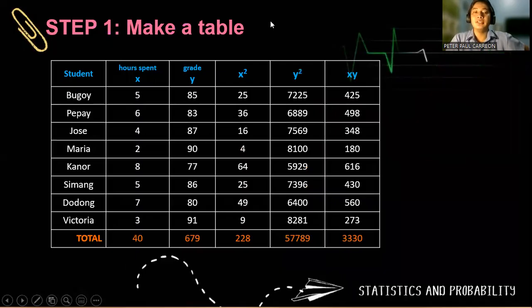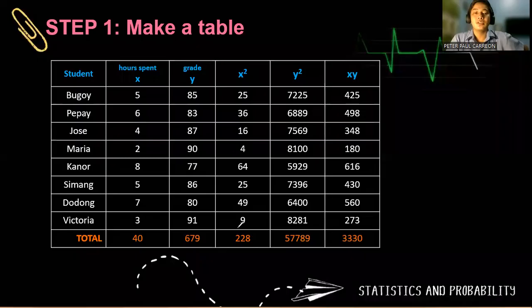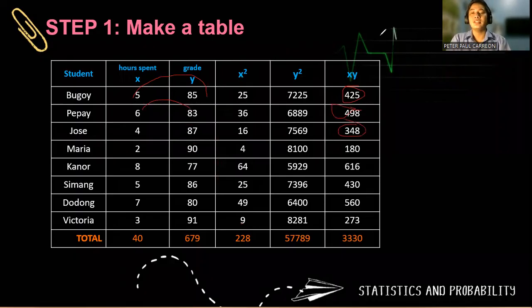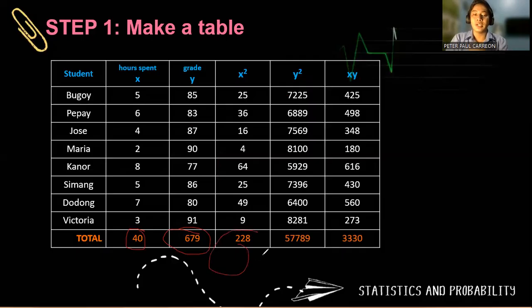Following step number one, we have x squared. So you square everything in this one: six times six, four times four, two times two, and so on. To get y squared, you have to square 85, 83, and so on. And to get the fifth column, you have to multiply five times 85, six times 83, to get the entries on this column. And of course, you also have to get the total of each. So this is the summation of x which is 40, summation of y 679, the summation of x squared 228, summation of y squared 57,789, and 3,330.